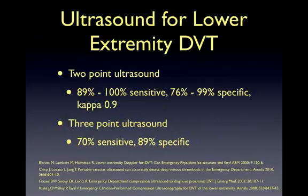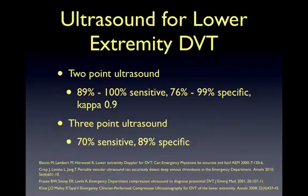Based on current literature, two-point ultrasound performed by EM physicians evaluating only the common femoral vein and popliteal vein has both good sensitivity and specificity for diagnosis of proximal lower extremity DVTs. A study done in 2001 by Fraze et al., published in the Journal of Emergency Medicine, performed two-point point-of-care ultrasound without assessing the intervening vasculature and showed 89% sensitivity and 76% specificity for identifying lower extremity DVTs.